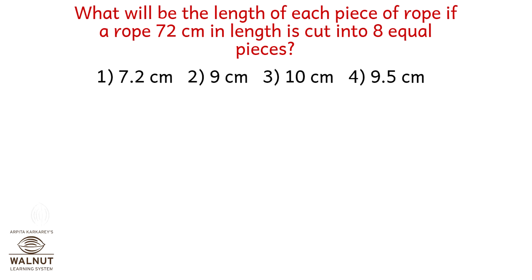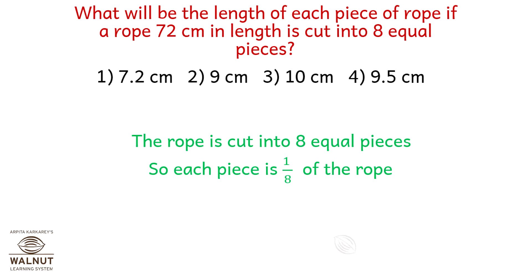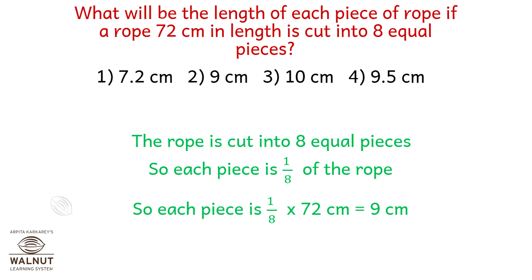What will be the length of each piece of rope if a rope 72 cm in length is cut into 8 equal pieces? The rope is cut into 8 equal pieces, so each piece is 1 eighth of the rope. Each piece is 1 eighth of 72 cm, which is 9 cm. Option number 2.